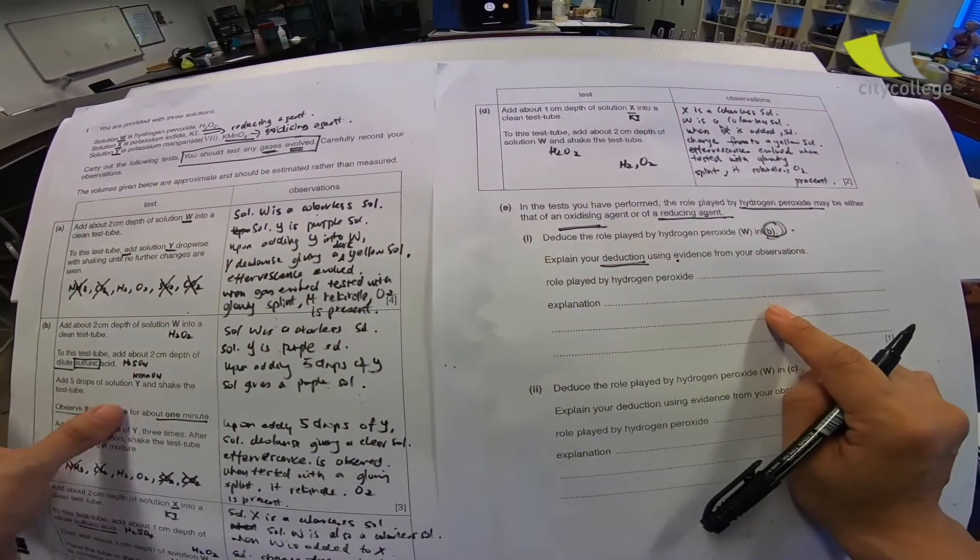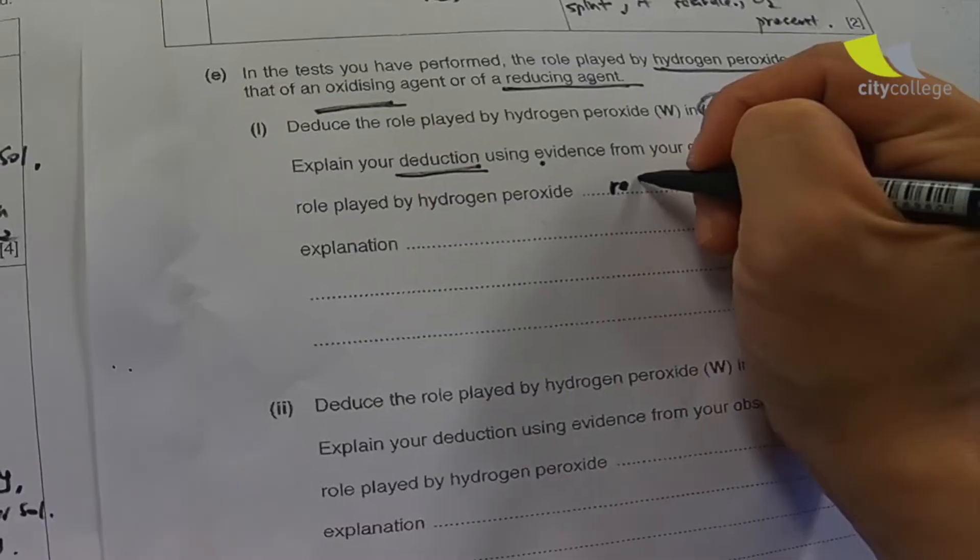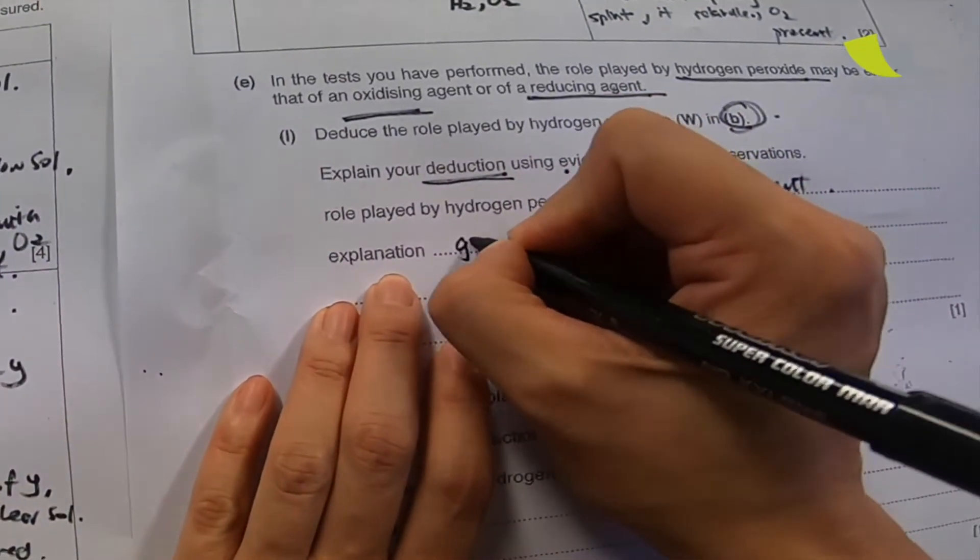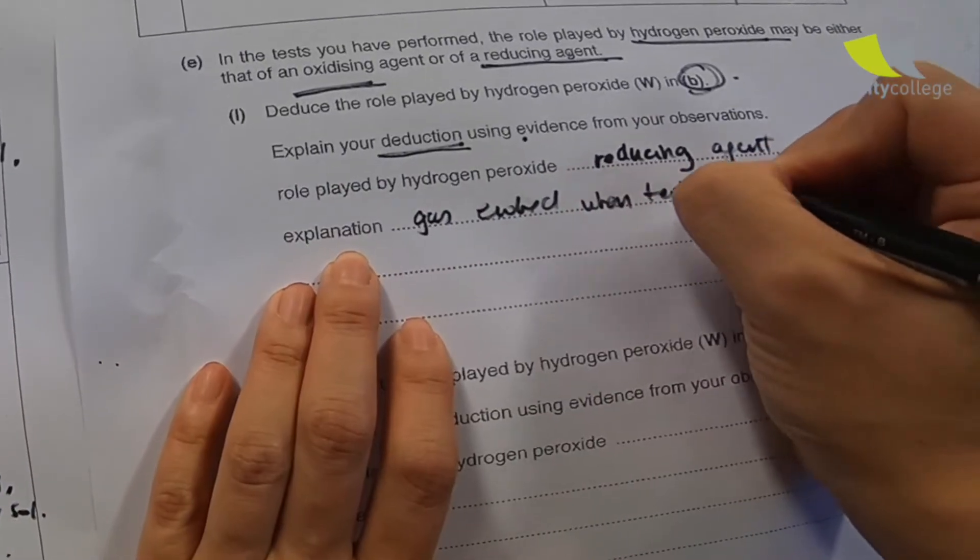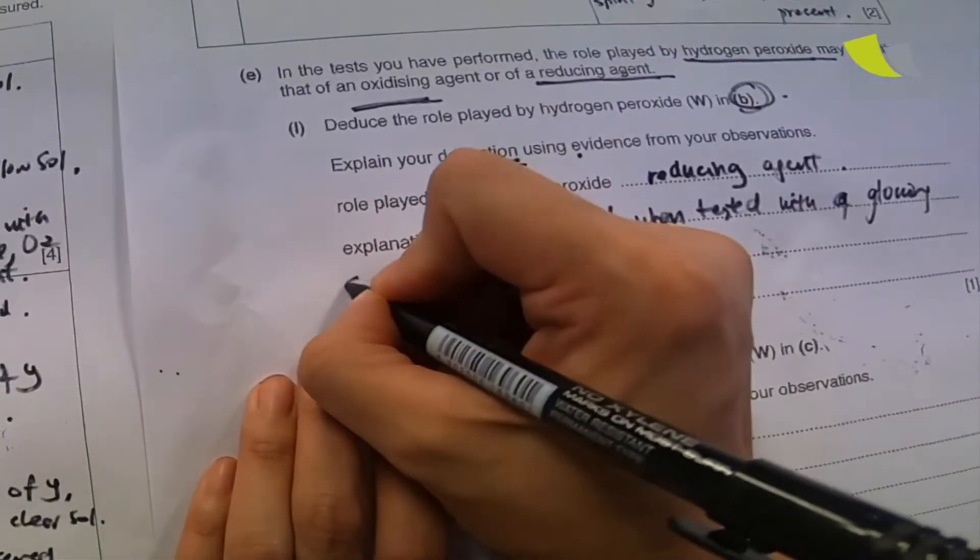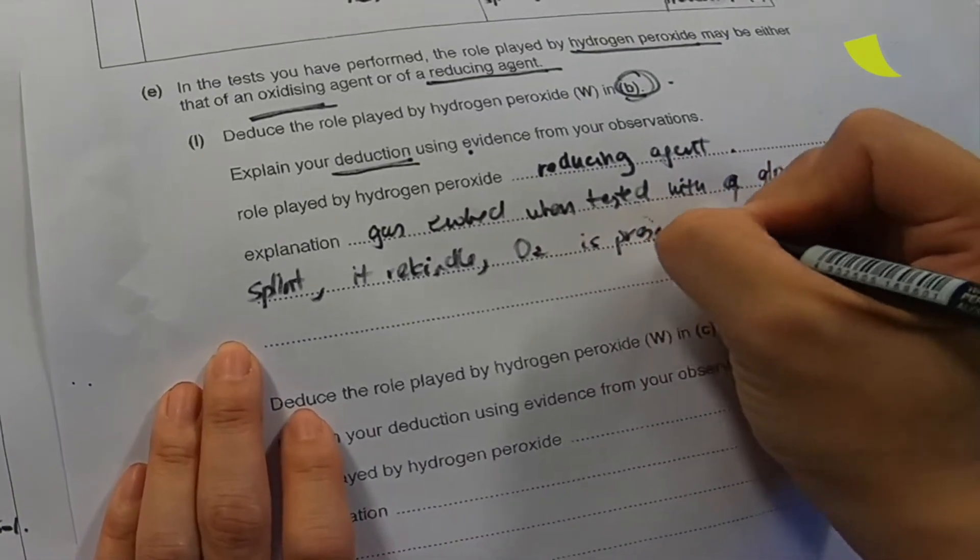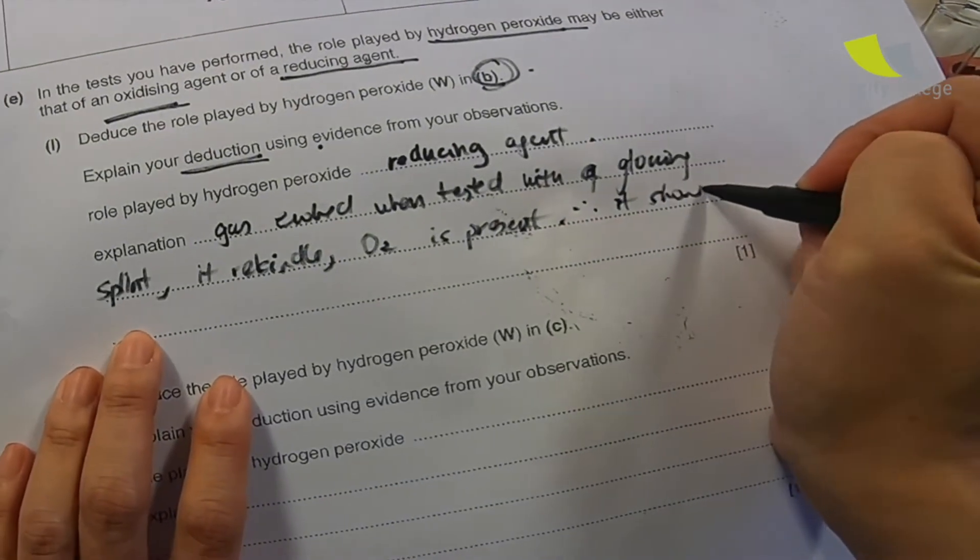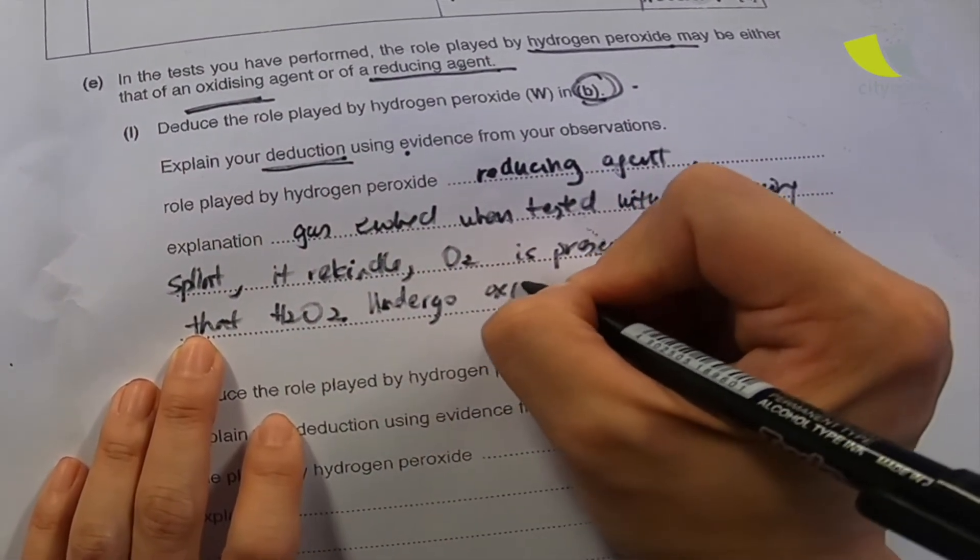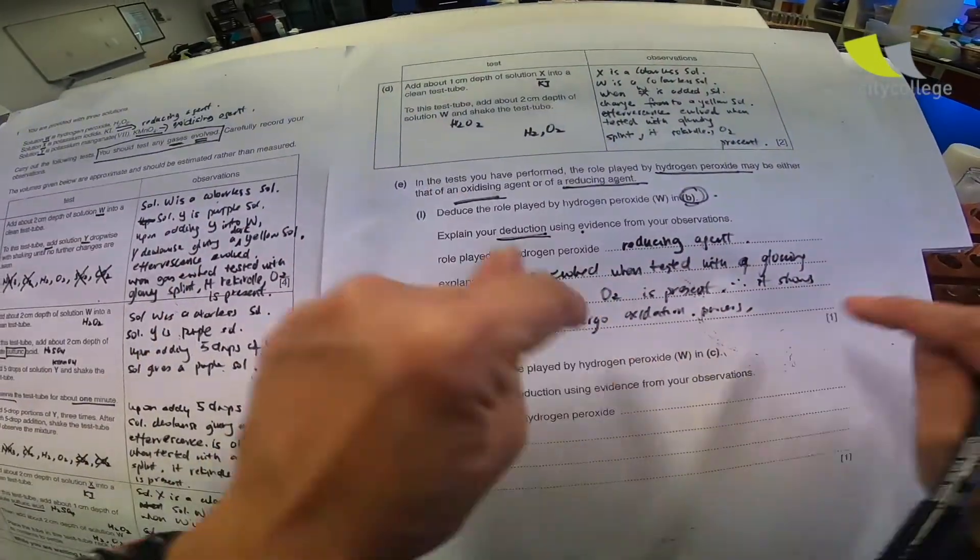So let's start by writing this down already. So over here, they say, what do you think is this? Now, since KMNO4 is an oxidizing agent and O2 is present, the role played by hydrogen peroxide, I can safely say that it is a reducing agent. Explanation, very simple. Gas evolved when tested with a glowing splint, it rekindled. O2 is present. Therefore, it shows that H2O2 undergoes oxidation process. That's all. Because if you are a reducing agent, you will go through oxidation. Very simple, the opposite.